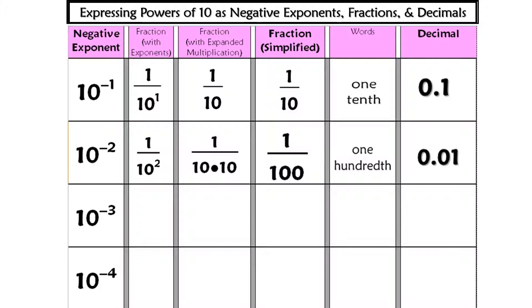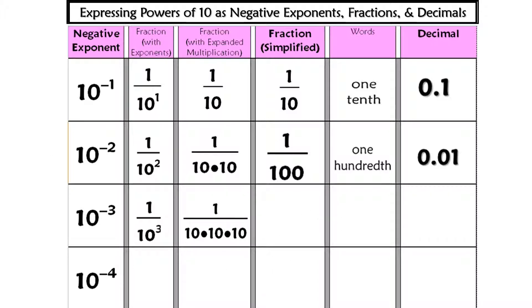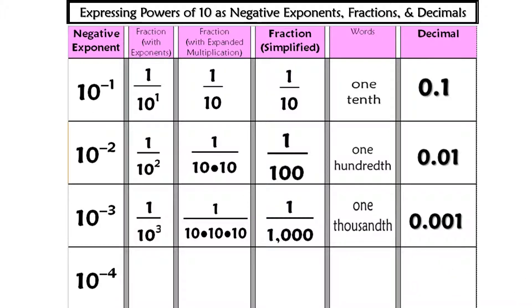All right, let's see what you came up with. 10 to the negative third as a fraction is going to look like 1 over 10 to the positive third. Well, 10 to the third power is just 10 times 10 times 10, which is 1 over 1,000, which is one thousandth, which is 0.001.